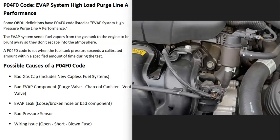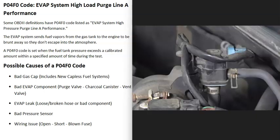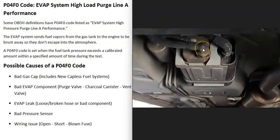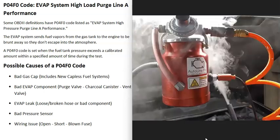Another possible cause is a leak inside the system — a bad hose, or a damaged component like the charcoal canister leaking and throwing off the pressure. You can look around for anything visibly damaged like a broken hose, but this can be hard to do with so many hoses and components. If you take it to a mechanic, they'll use a smoke machine — feeding smoke into the EVAP system — to find wherever the leak is.